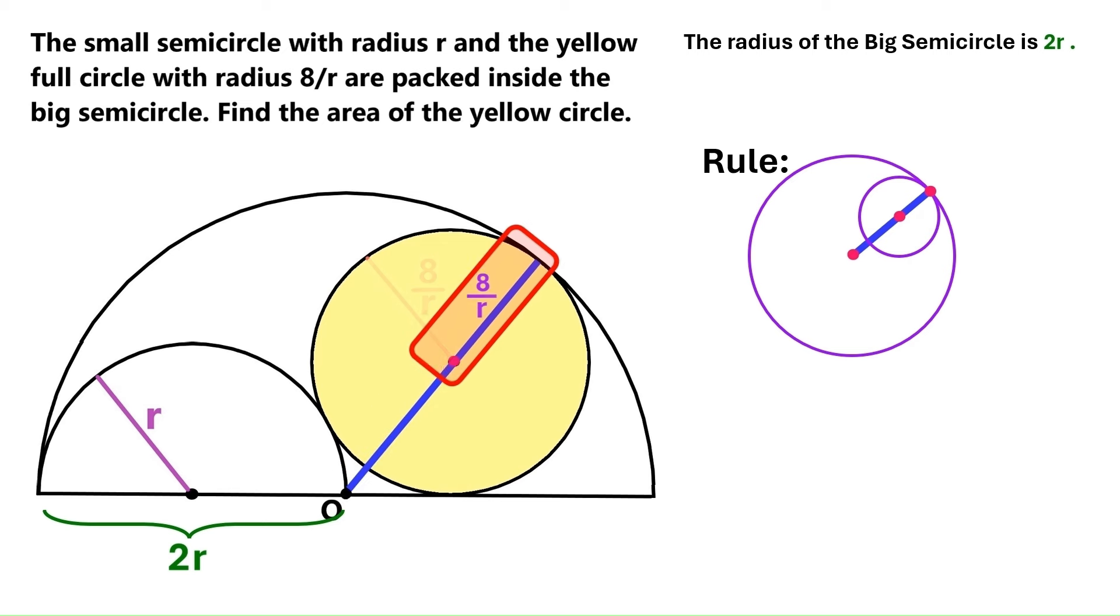Now we know this distance is 8 over r, because it's the radius of the yellow circle. And so is this distance. We also know this entire segment is 2r, because it's the radius of the big semicircle. And we can deduce that this tiny pink distance down here is 2r minus 16 over r.